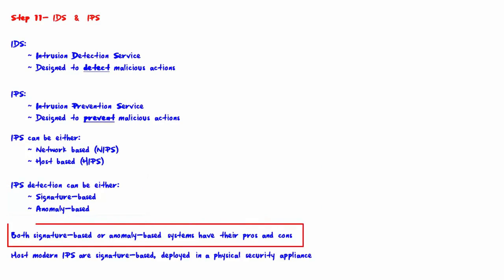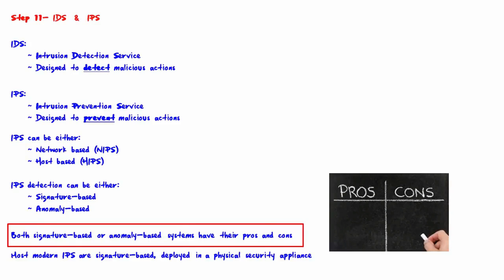Both signature-based and anomaly-based systems have their pros and cons. Signature-based pros: low false positives. Signature-based cons: can only detect exploits for which a signature exists, so signatures must constantly be updated. Anomaly-based pros: does not need to be constantly updated. Anomaly-based cons: high false positives.